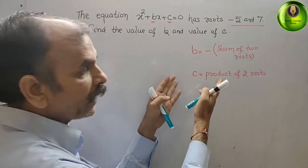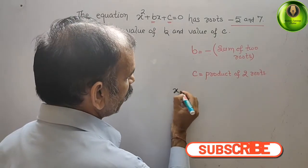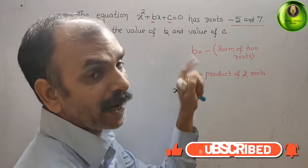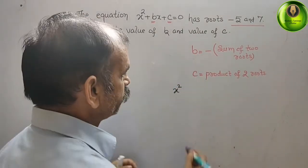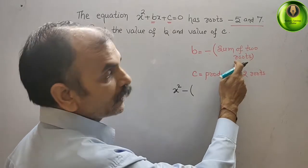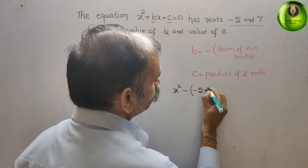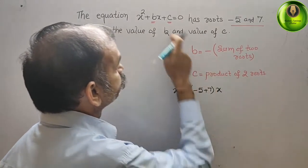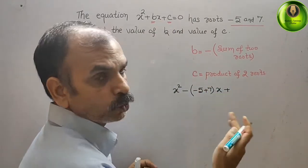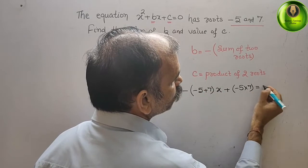Now we will try to do this in standard form. You can see x squared here — they have given plus. But we know that b is nothing but minus of the sum of the roots. So we write minus of the sum of the two roots: minus 5 plus 7, giving us x. And c is the product of two roots, so c is minus 5 into 7.